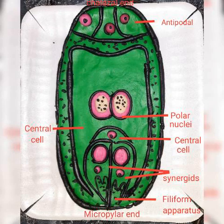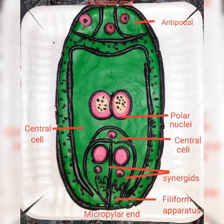Three cells are grouped together at the micropylar end and constitute the egg apparatus. The egg apparatus in turn consists of two synergids and one egg cell. The synergids have special cellular thickening at the micropylar tip called the filiform apparatus.